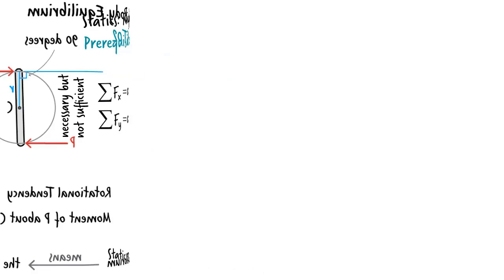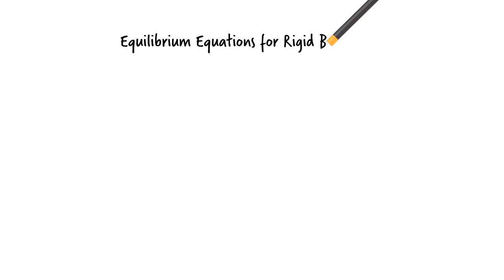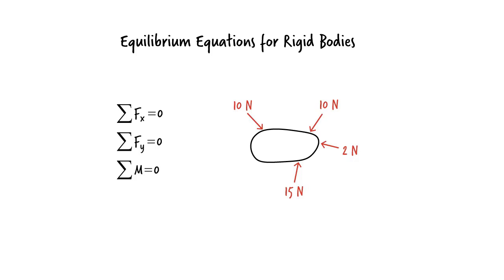We can use these equations in two ways. They can be used to determine if a given set of forces place the rigid body in a state of equilibrium. Or, we can use them to determine the magnitude or direction of one or more unknown forces needed to maintain equilibrium. Let's examine each case using an example.